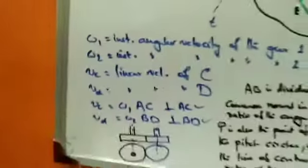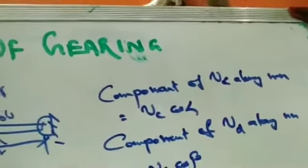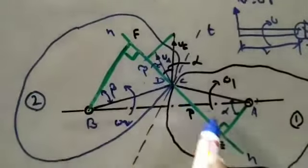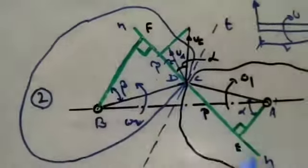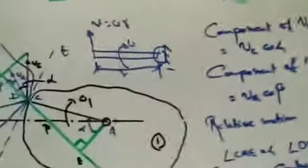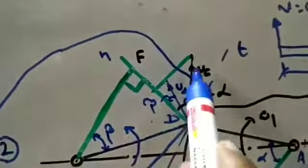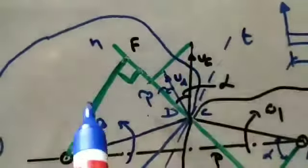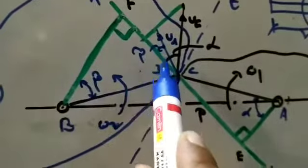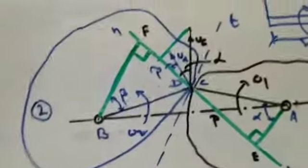Now we analyze the components of vc and vd along the common normal NN, which passes through the point of contact of the two bodies. The component of vc along NN is vc·cosα, and the component of vd along the normal is vd·cosβ.